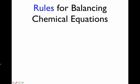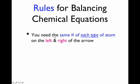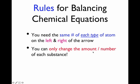Here are the rules summarizing what you need to do to balance chemical equations. The first rule is that you need the same number of each type of atom on the left and right side of the arrow. If you start with four hydrogen atoms on the left, you need to end with four hydrogen atoms on the right. You're not allowed to gain or lose any material. The second rule is that you can only change the amount or number of each type of substance — you can only change the number in front of each formula in your chemical equation.